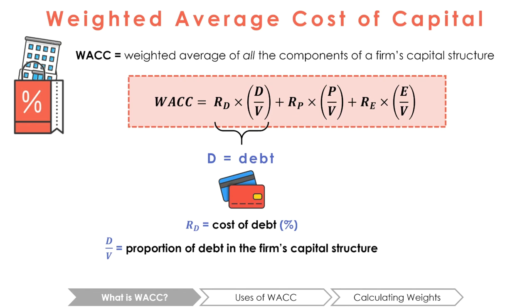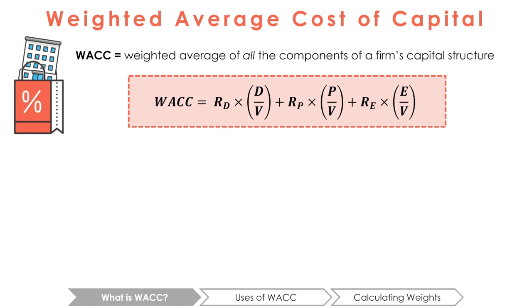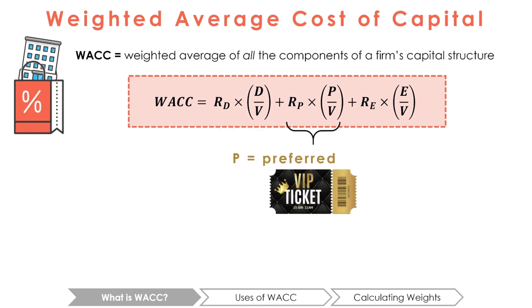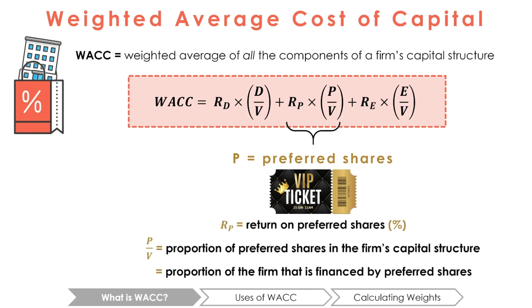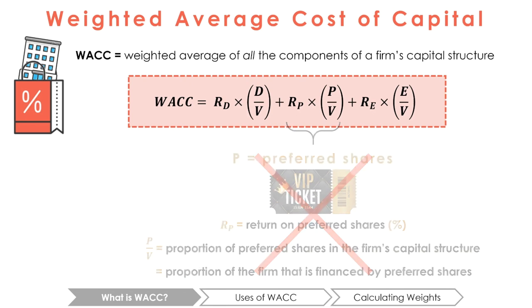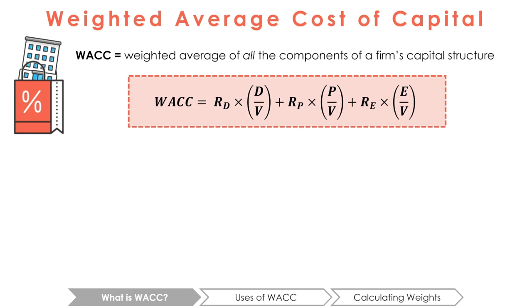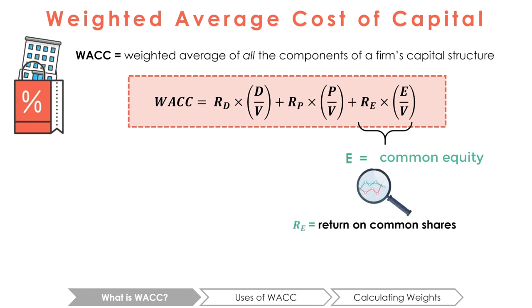That is, the fraction of the firm that is financed by debt. The second part of the formula calculates the weighted cost of preferred shares, P. If a company does not have preferred shares, then we simply ignore this part of the formula. The last component, E, is for equity. This part calculates the percent return earned by common shareholders multiplied by the percentage of common equity in the firm's capital structure.